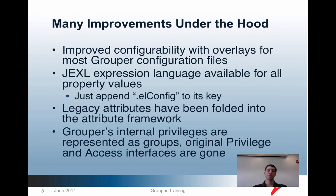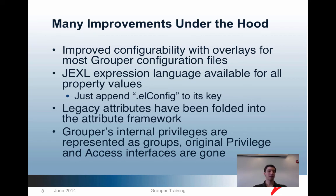There are many new improvements under the hood. Most of the configuration files now use overlays. Java Expression Language is available for all property values — all you need to do is append .el to the attribute's key. Legacy attributes have been folded into the attribute framework, and Grouper's internal privileges are now represented as groups. The original privilege and access interfaces have been removed.